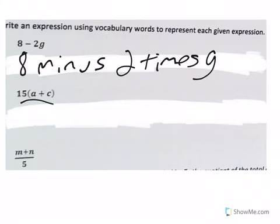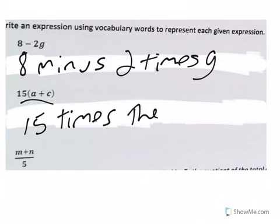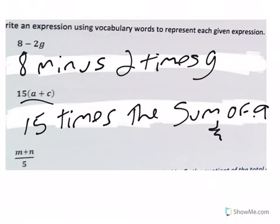This next one here, you could say 15 times the sum, since we're adding, of A and C. 15 times the quantity of A increased by C. The product of 15 and the sum of A and C. 15 multiplied by the total of A and C. Lots of different ways to say it.